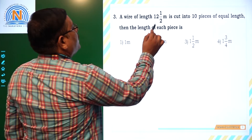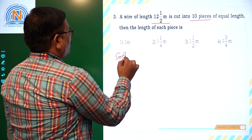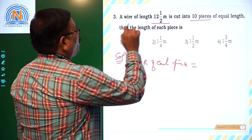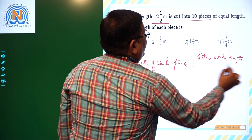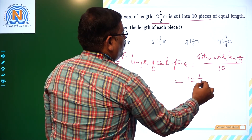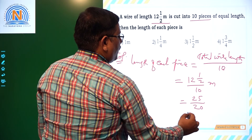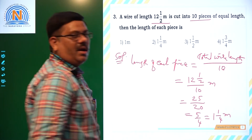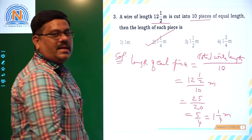Next: a wire of length 12 1/2 meters is cut into 10 pieces of equal length. What is the length of each piece? Length of each piece equals total wire length divided by 10. Total wire length is 12 1/2 meters, so 12 1/2 divided by 10 = 25/2 divided by 10 = 25/20 = 5/4 = 1 1/4 meters. Each piece length will be 1 1/4 meters — that is the second option.